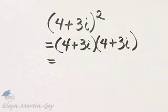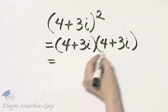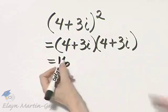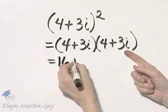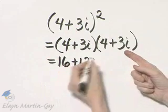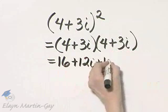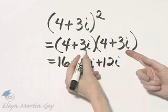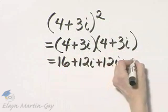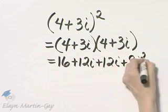And then I'll go ahead and use the FOIL order of multiplying. So that's first times first, which is 16. Outer product, that's 12i. Inner product, 12i. And last times last, that's plus 9i squared.